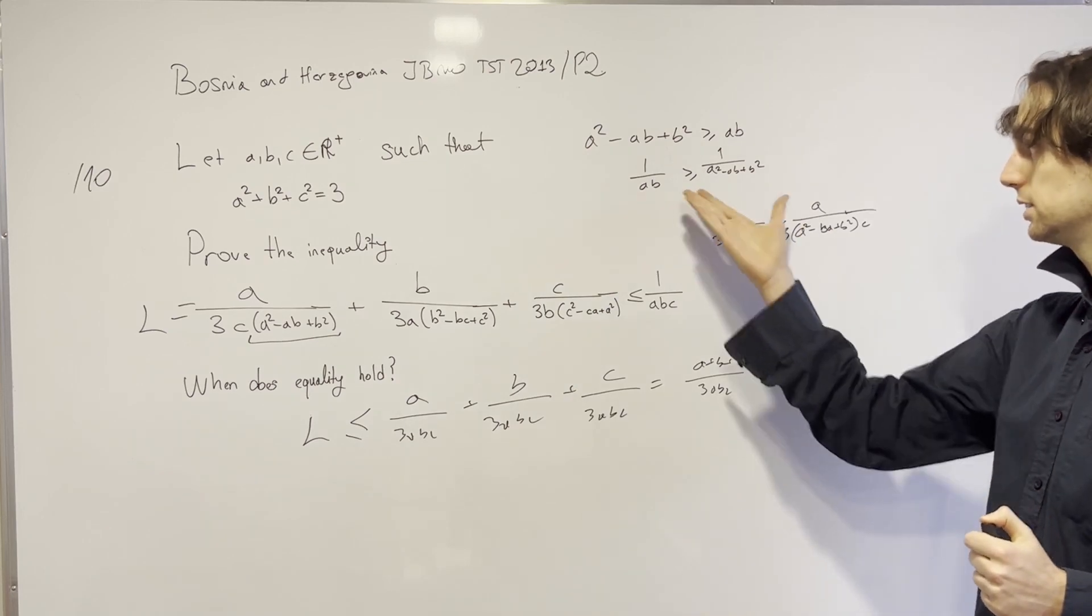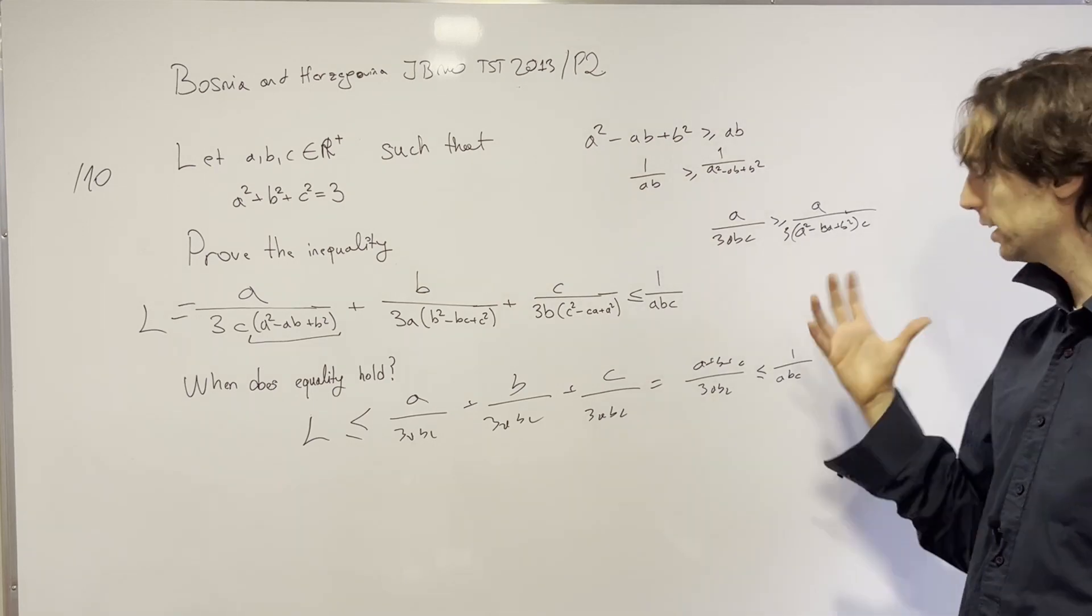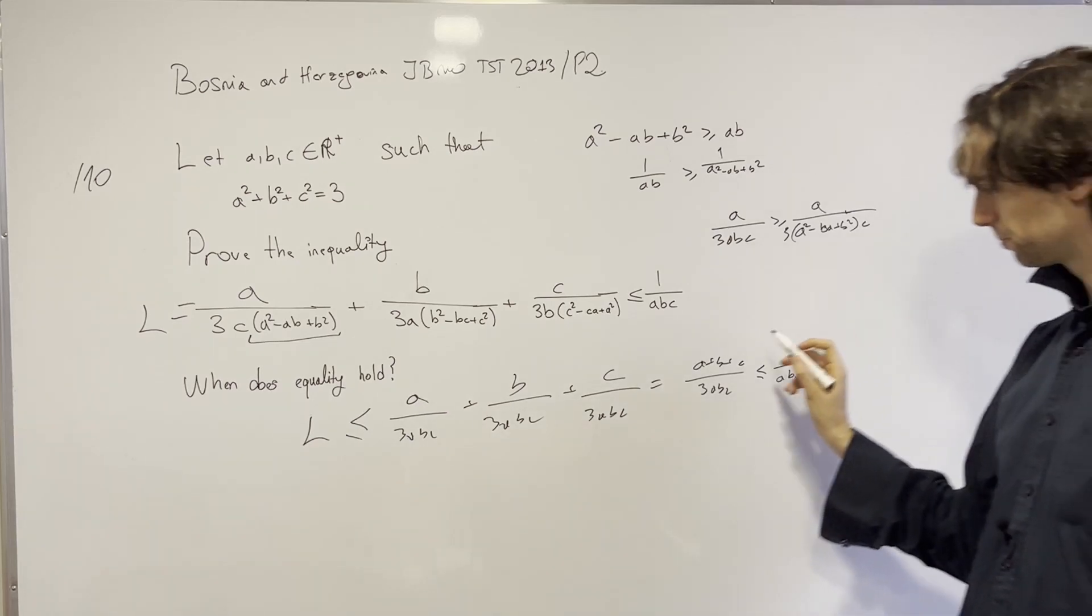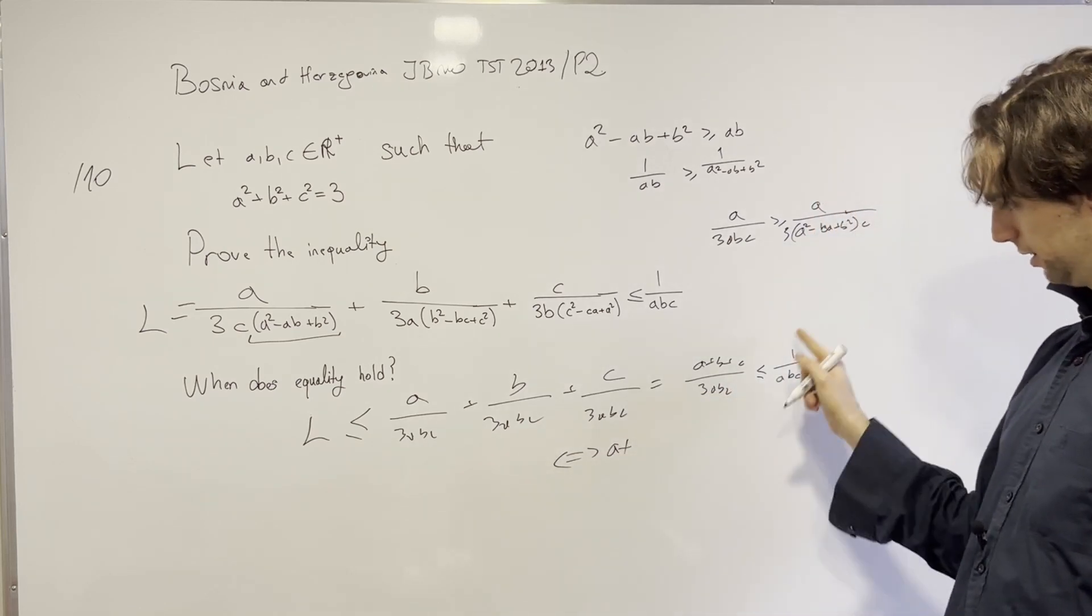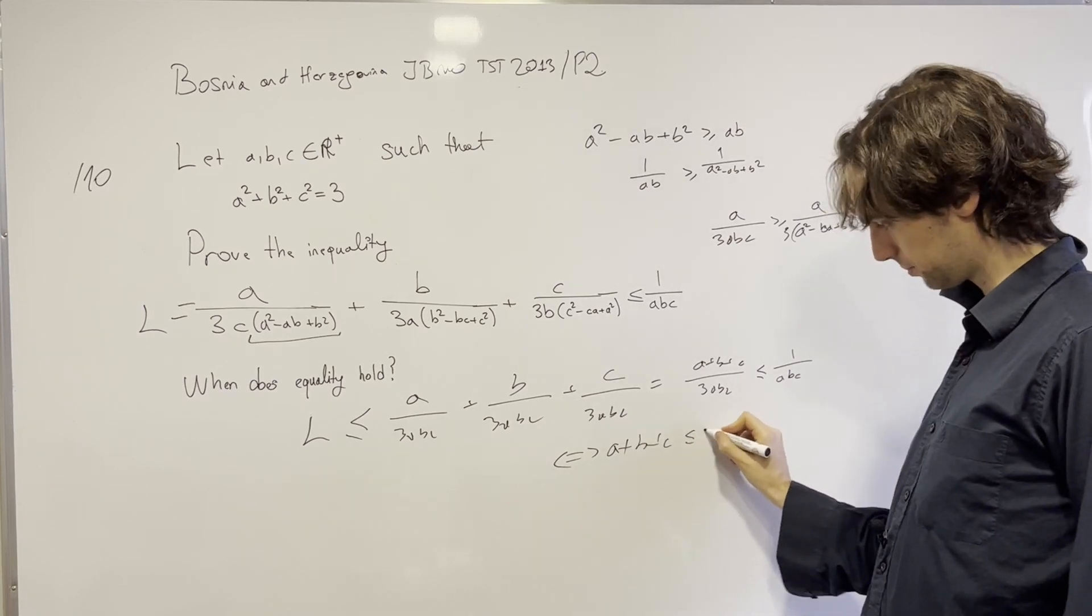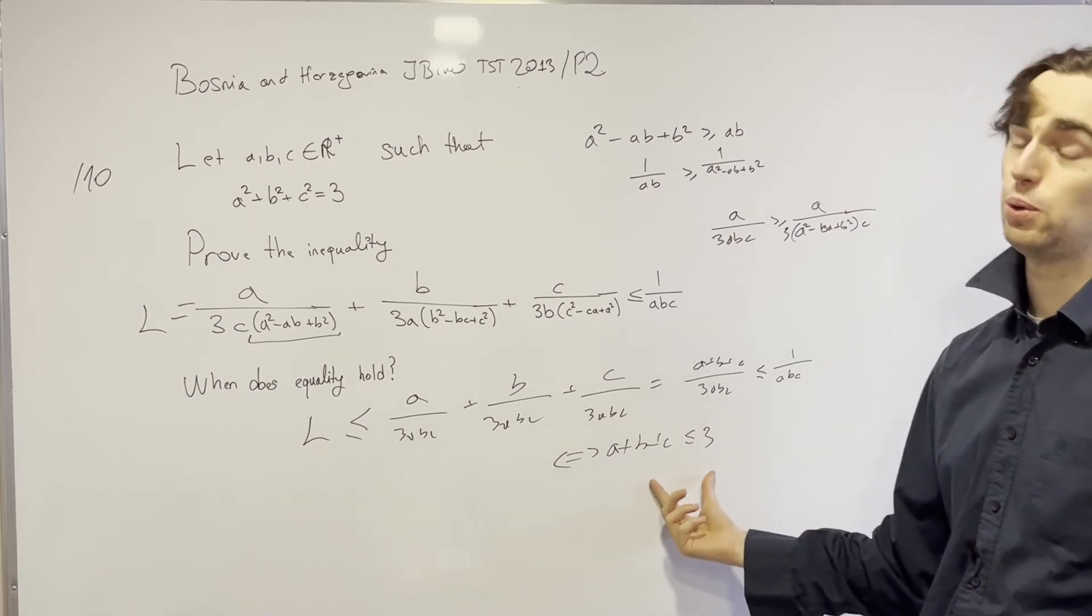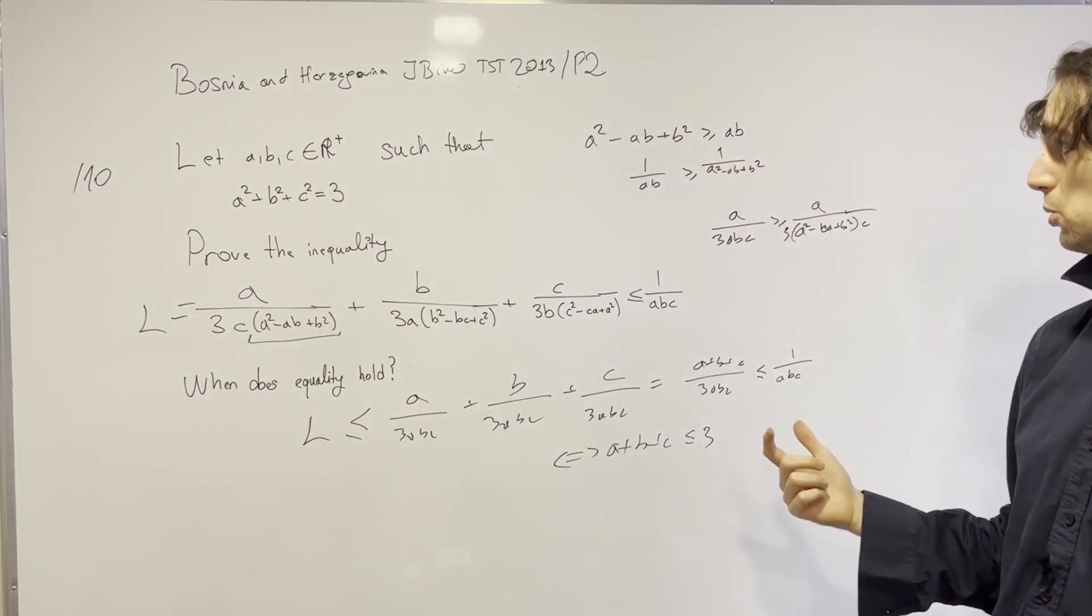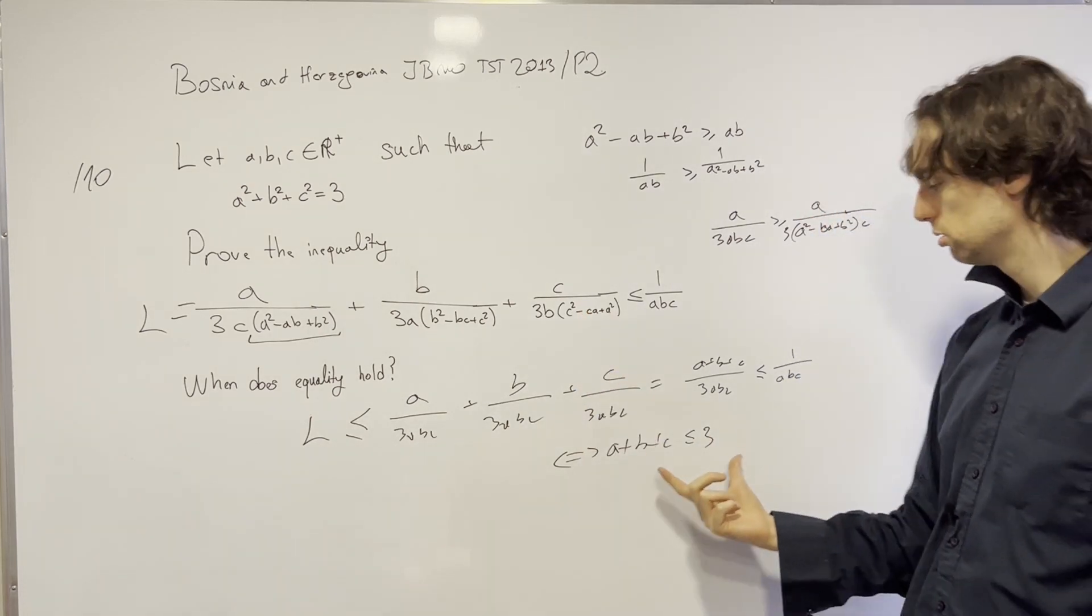And then this is easier to estimate. It's easier for us to try to prove that this is less than this, than to multiply everything through here. Now, it might be that this inequality is too strong, but let's check this out. And I invite you to pause for another 10 minutes and try to check it out, see if you can prove that this is greater than or equal to this. And here's the next step. Well, this is greater than or equal to this, if and only if, when you multiply everything through by 3abc, if and only if a+b+c is less than or equal to 3. Can we prove this in any way, shape, or form? We still haven't used our condition that a²+b²+c² is equal to 3.